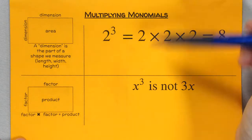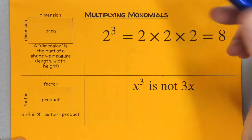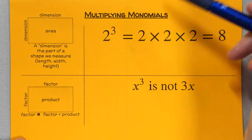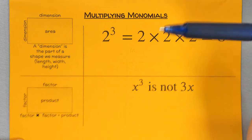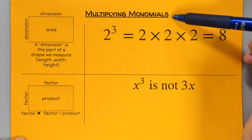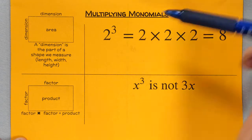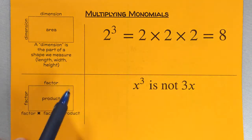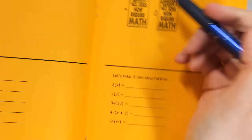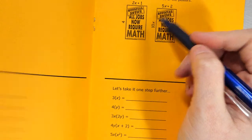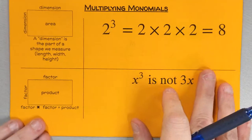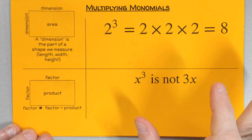The unit we just finished was on how to add, subtract, find perimeter, and combine like terms using polynomials. Now we're going to start multiplying. It says multiplying monomials, because right now it's almost like distributing — instead of just distributing a number, I might also be distributing some letters. Multiplying binomials is next week, and that's a different topic.